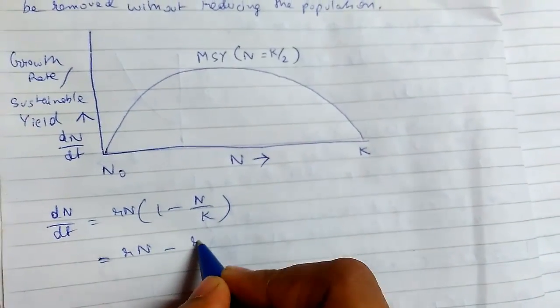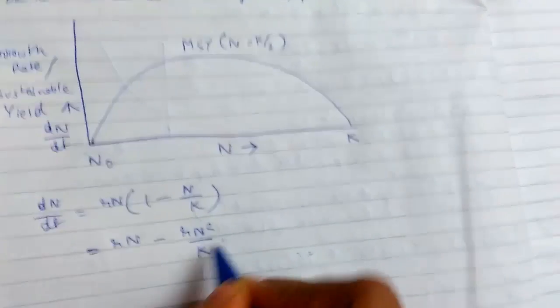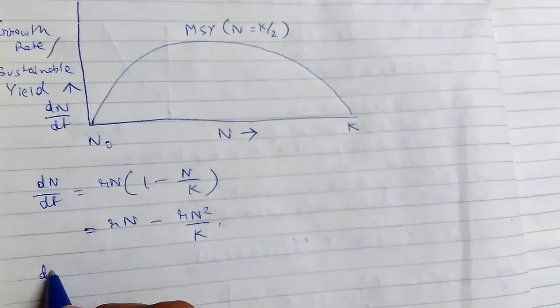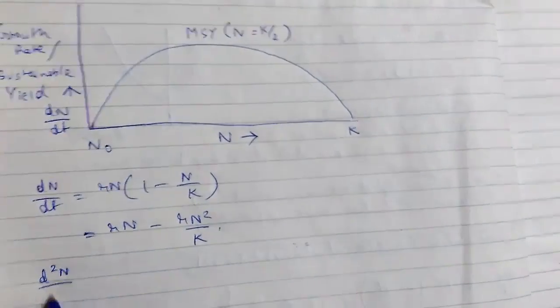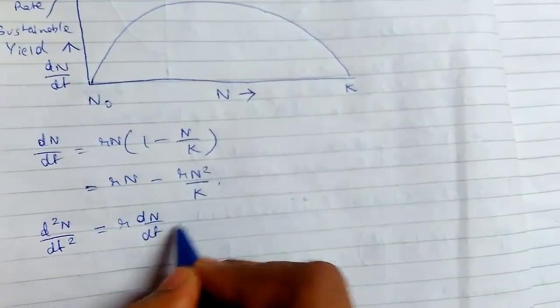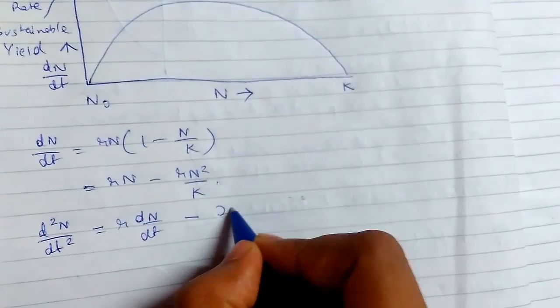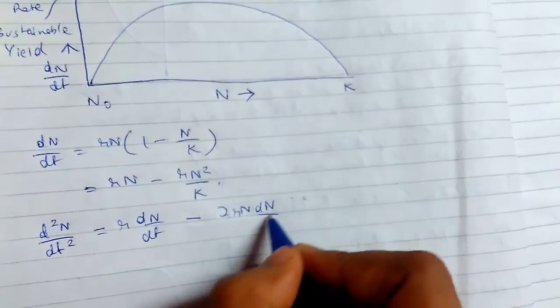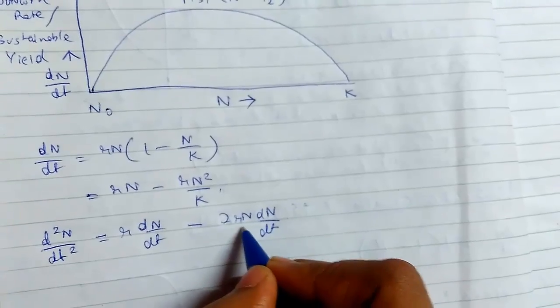So first, let me just multiply it. So now we just differentiate it. d²N/dt² equals r(dN/dt) minus 2rN(dN/dt)/K.